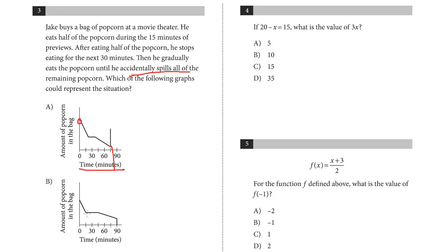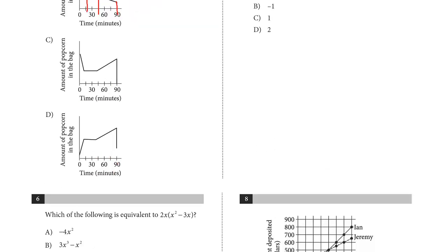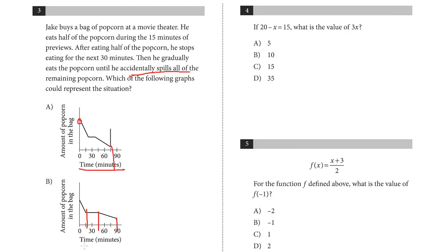B looks pretty good as well. It's similar to A in the beginning, but you see where he stops eating is right from 15 to 45. This is good, right? This wasn't long enough. That's 30 minutes. Then he starts eating it some more, and he spills it all, and it dumps to the floor. So let's just look at the other... yeah, it would never go up when he's eating it. So the answer is B for number 3.